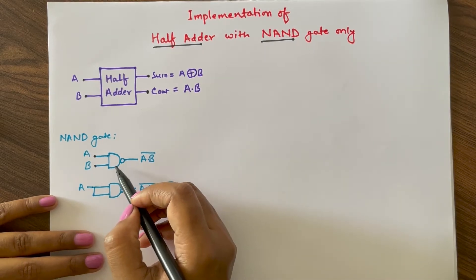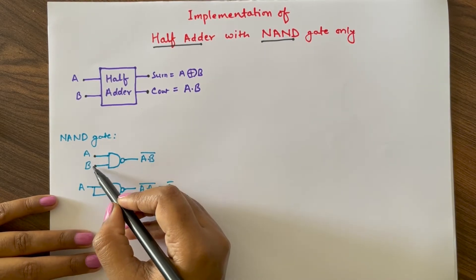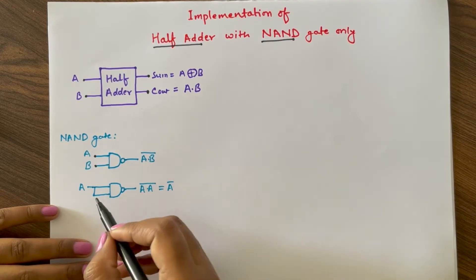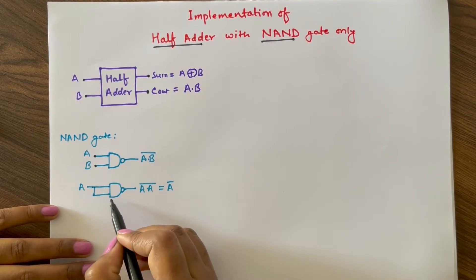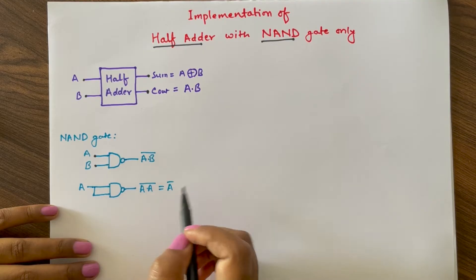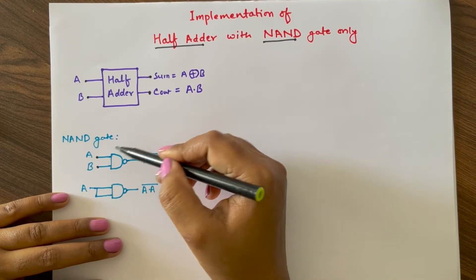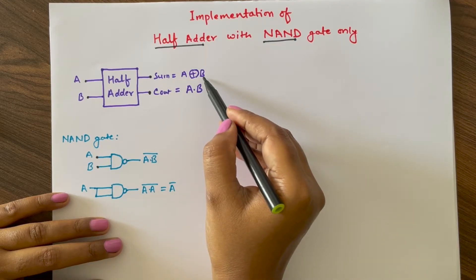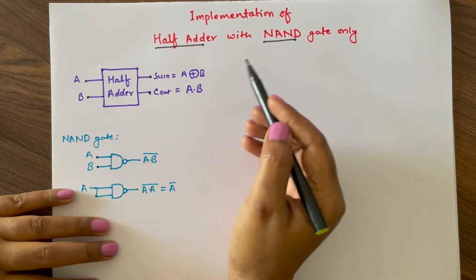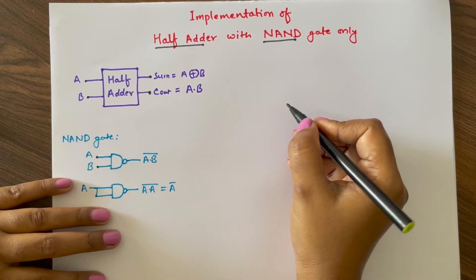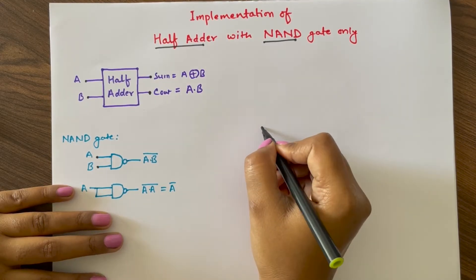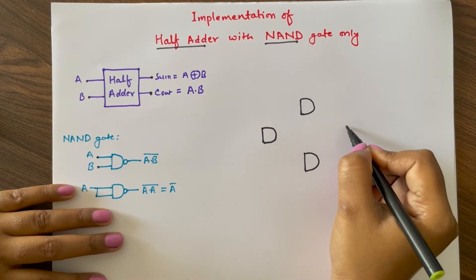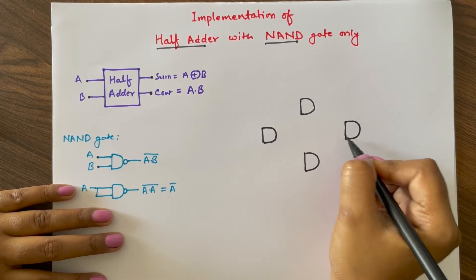We have to design this half adder with NAND gates only. For a NAND gate, if there are two inputs A and B, the output will be A dot B whole bar. And if there is a single input, the NAND gate will invert that input. Now let us design this half adder with NAND gates only. The sum of the half adder is A XOR B, and this XOR gate can be realized using four NAND gates. Let us draw the four NAND gates: first gate, second gate, third gate, and fourth gate.